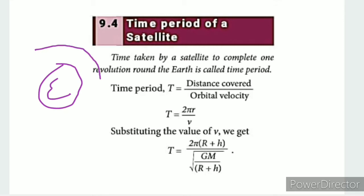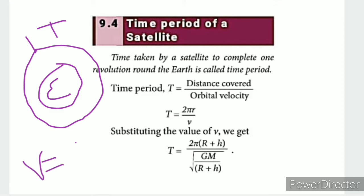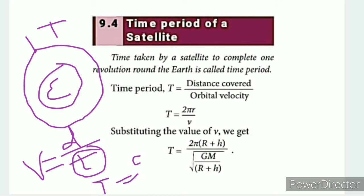To understand time period, we will understand velocity. Time period equals distance divided by time. On the left-hand side we will evaluate: we call it d divided by v, that is distance covered by orbital velocity.